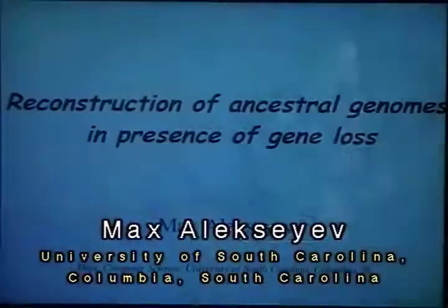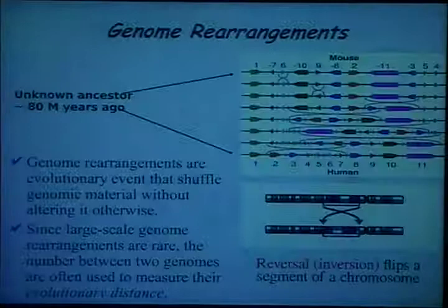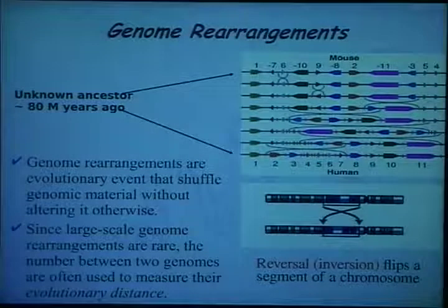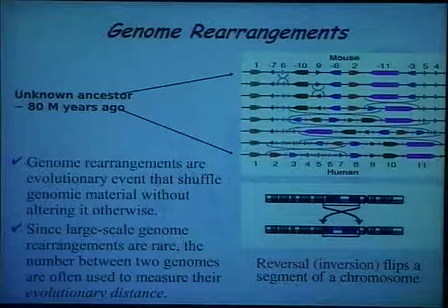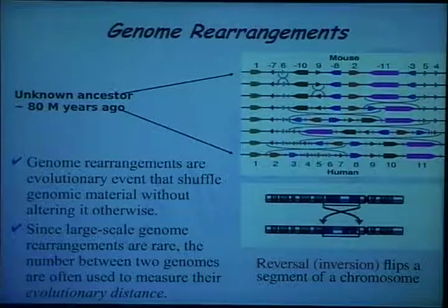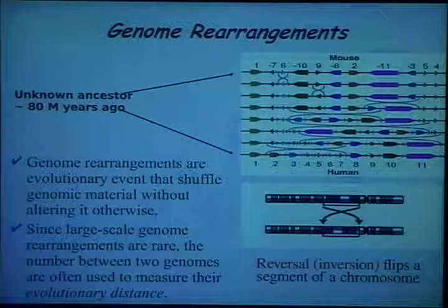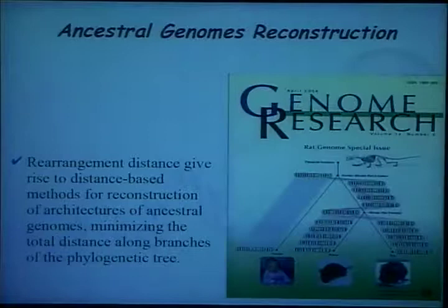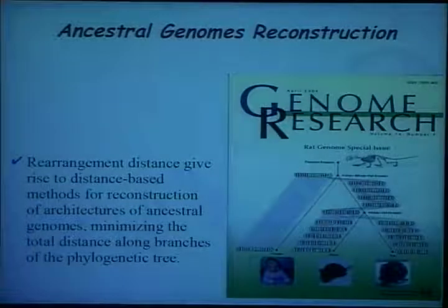I will talk about reconstruction of ancestral genomes in presence of gene loss. Genome rearrangements are evolutionary events that shuffle genomic material without altering it otherwise. Since large-scale genome rearrangements are rare events, they can be used to measure evolutionary distance between two genomes. This gives rise to distance-based methods for reconstruction of ancestral genomes.